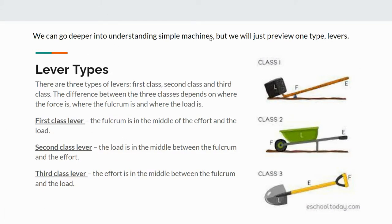We can go deeper into understanding each simple machine. There are all different types of gears, pulleys, levers, wheels and axles, and wedges. For example, there are actually three different classes of levers. The difference between each class depends on where the force, fulcrum, and load are positioned relative to one another.